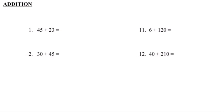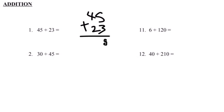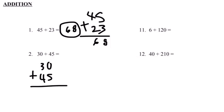The next topic is addition, and it's asking us to add the numbers below. Number 1: 45 plus 23. Let's align the numbers vertically so it's easy for us to add. 45 plus 23 — 3 plus 5 equals 8, and 4 plus 2 equals 6. Our final answer is 68. Next: 30 plus 45 — 5 plus 0 equals 5, and 4 plus 3 equals 7. Our final answer is 75. 30 plus 45 equals 75.